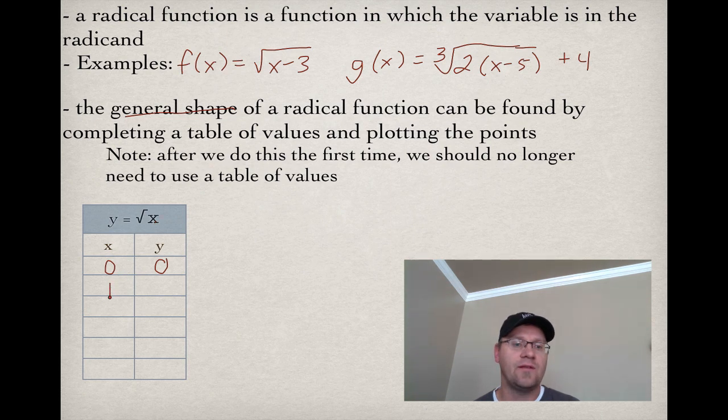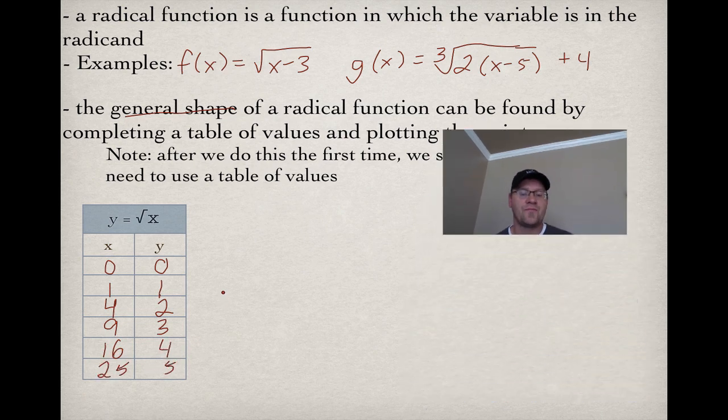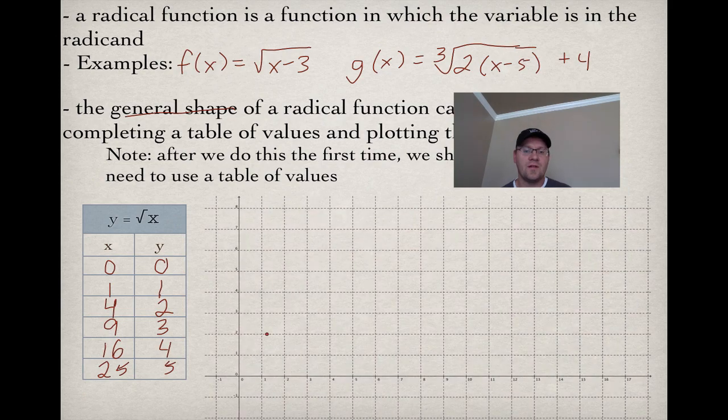If I plug in an x value of 0, I get a y value of 0. If I plug in an x value of 1, I take the square root of that, it remains 1. I'll put in an x value of 4, and the square root of that is 2. An x value of 9 gives me a y value of 3. An x value of 16, y value of 4. X value of 25, y value of 5.